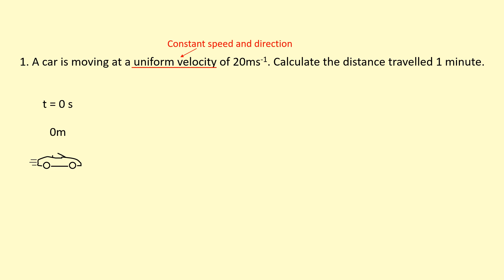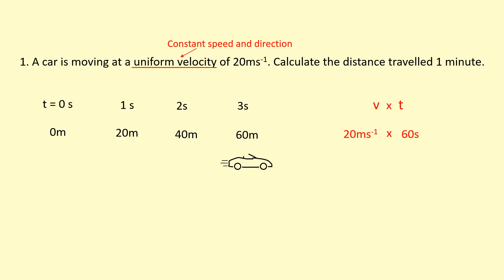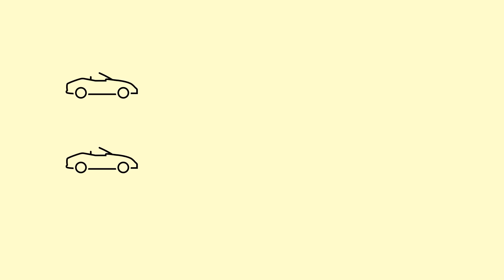Let's visualize this. At t = 0 the car is at 0 meters; after one second it has traveled 20 meters, after two seconds 40 meters, after three seconds 60 meters — so every second it travels 20 meters. To find the distance traveled, we use velocity × time: 20 m/s × 60 seconds (converting one minute to seconds), giving 1200 meters.